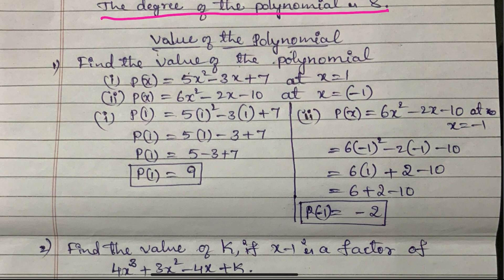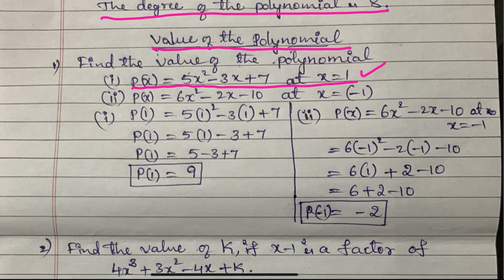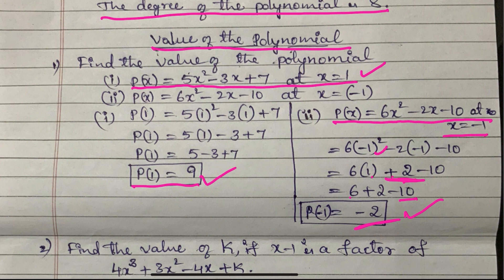They will also ask for the value of the polynomial. For example, P(x) equals 5x squared minus 3x plus 7 at x equals 1: substitute x equals 1 and we get P(1) equals 9. Another: P(x) equals 6x squared minus 2x minus 10 at x equals minus 1: substituting gives minus 2 as the answer. If the value of the polynomial is 0, then that is called the zero of the polynomial.